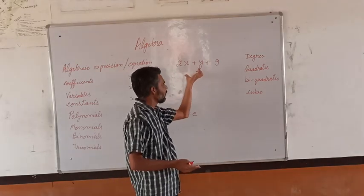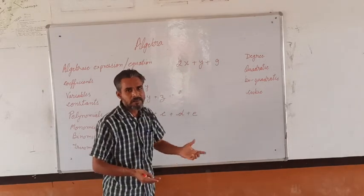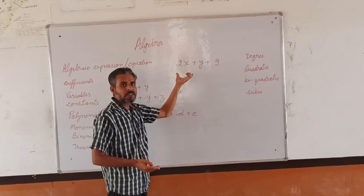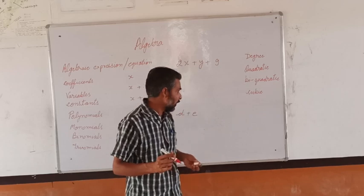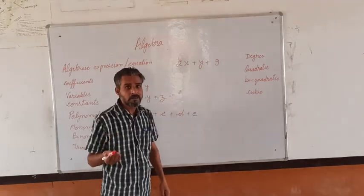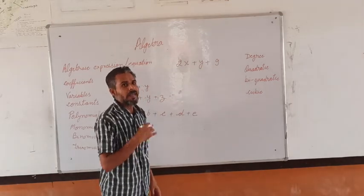Now here we are in two variables. So we can say that this is the algebraic expression in two variables. Now what about the equation? Algebraic equation. Equation means equate. We have to equate it with anything.